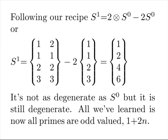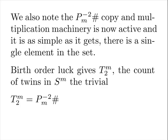All we've learned is now all primes are odd valued or of the form one plus two n. We also note the second minor primordial copy and multiplication machinery is now active, and it is as simple as it gets. There is a single element in the set. Birth order luck gives our type count of twins in S^m the trivial second minor primordial.